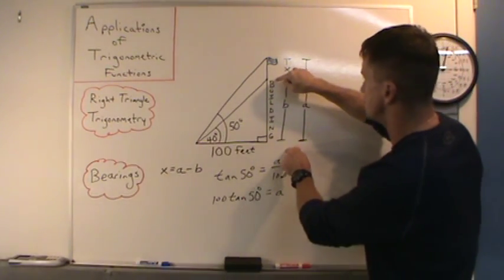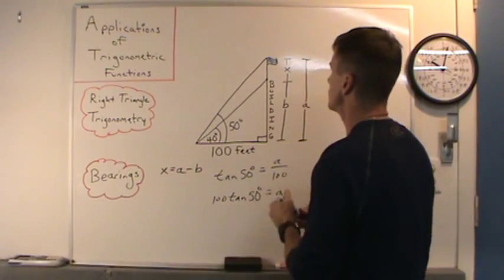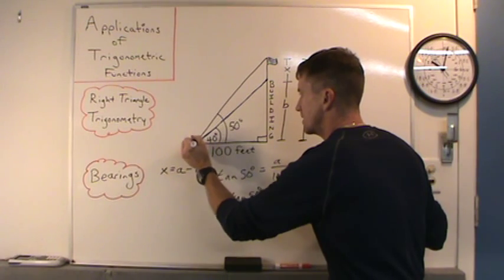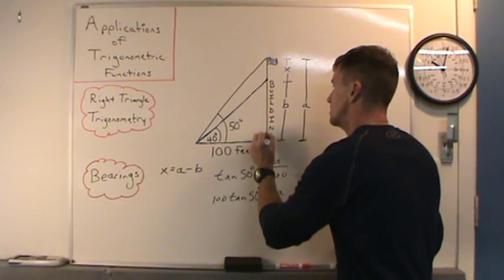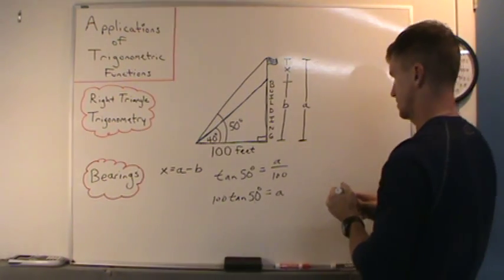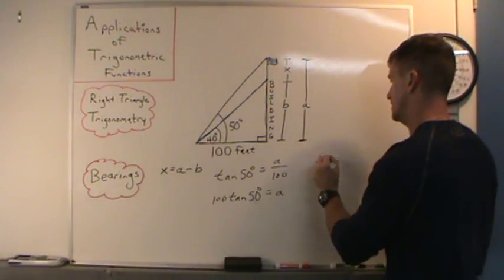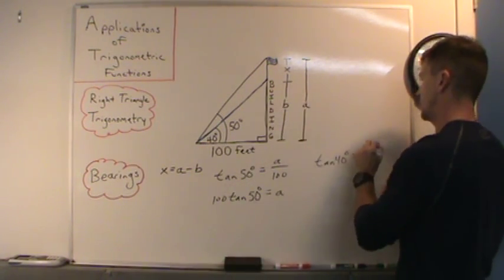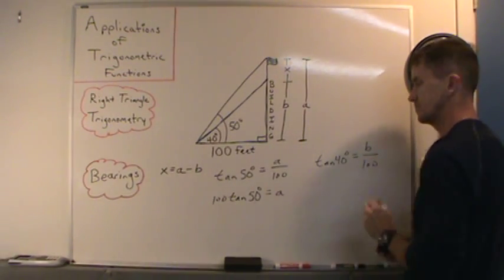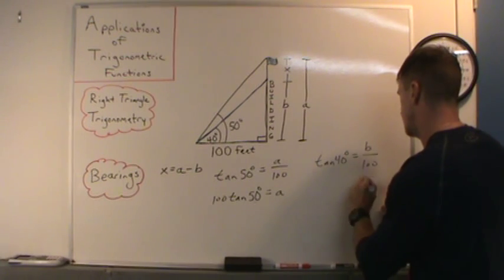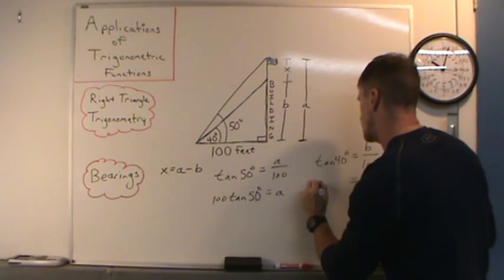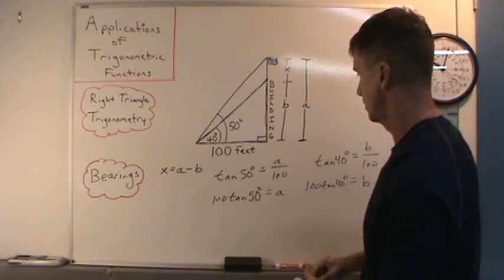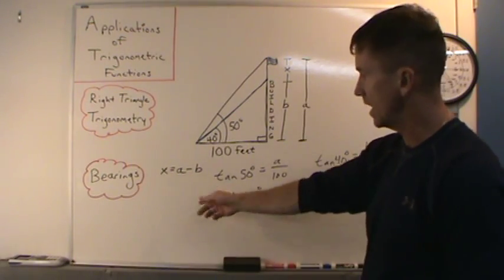Now b — that's the height of this building. That's this smaller right triangle with a 40 degree angle, the angle of elevation. So in that right triangle, tangent of 40 degrees equals opposite b over adjacent 100. We'll multiply 100 on both sides, so b equals 100 tangent of 40. We get these two values, subtract them on the calculator, and we'll have x.